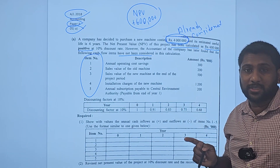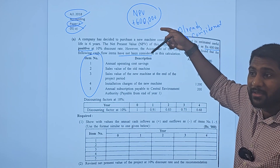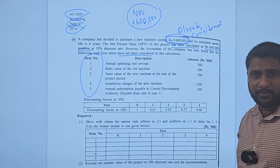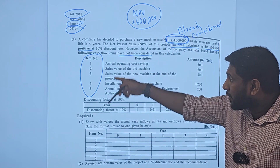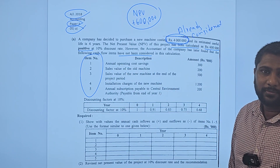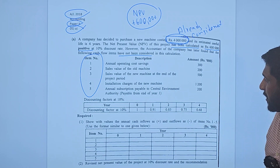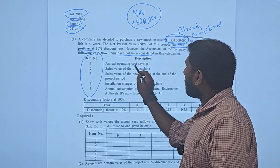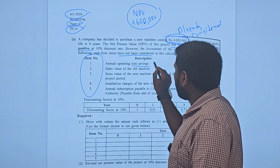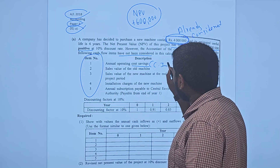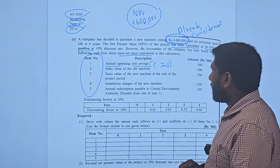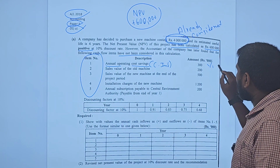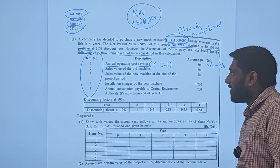So here what you have to understand: annual operating cost saving — a cost saving is a cash inflow for the company. Every year you will have a saving of 300,000 from Year 1 to Year 4, so each year there is a 300,000 inflow.